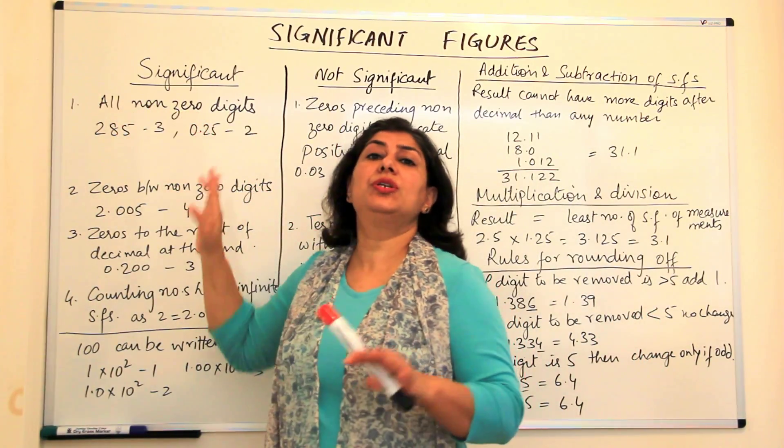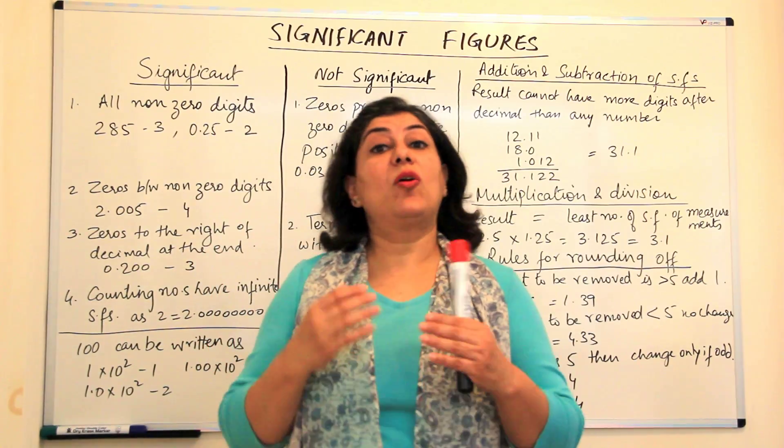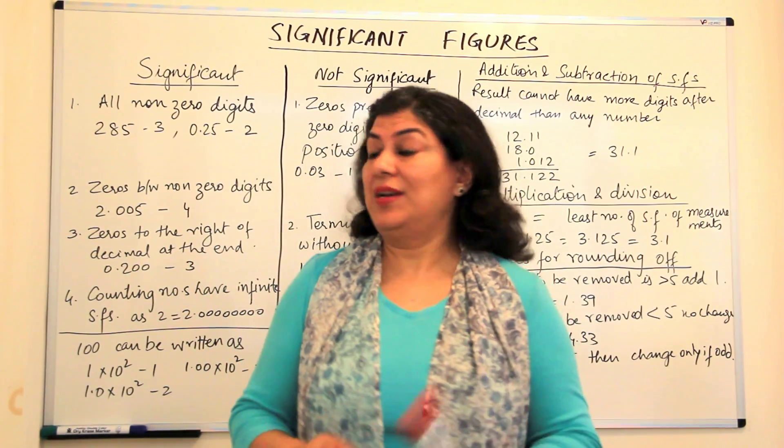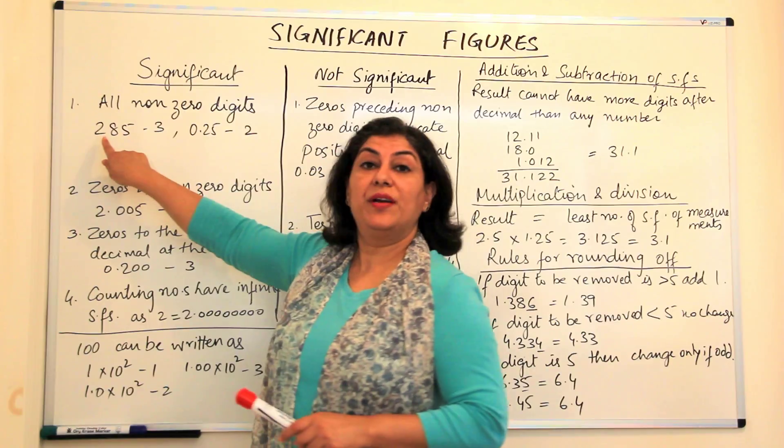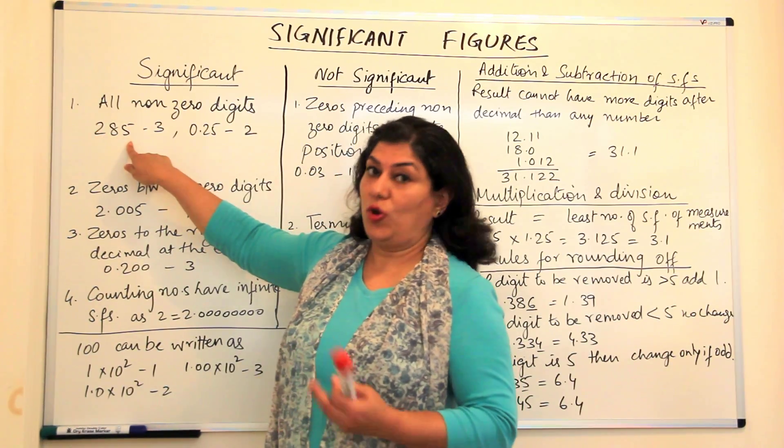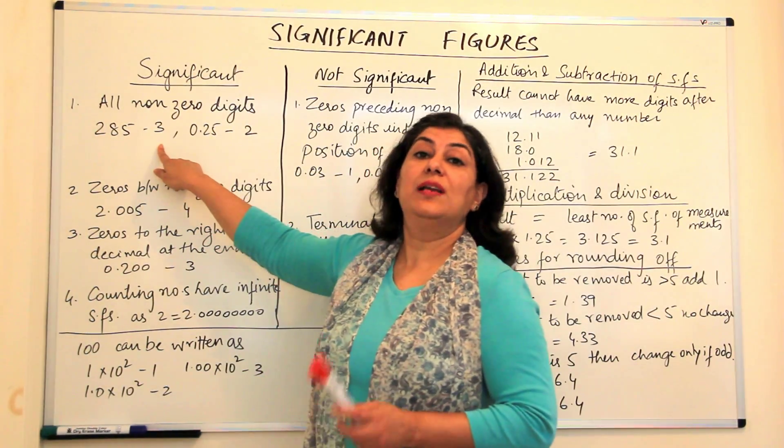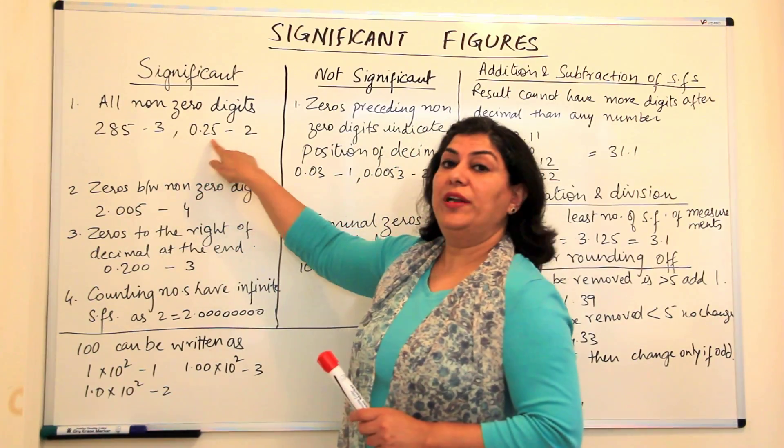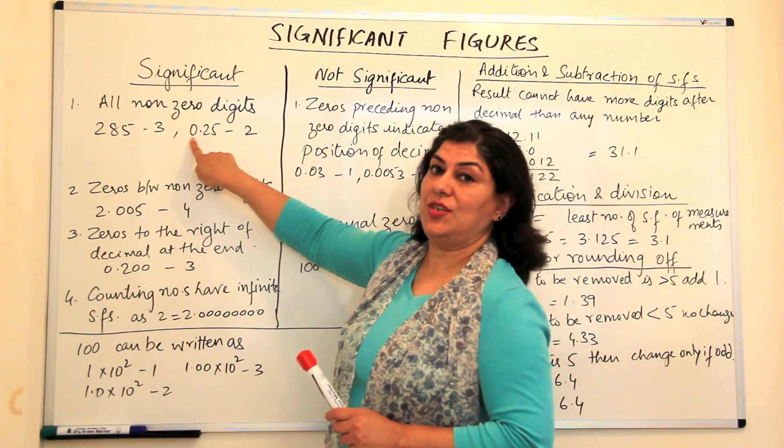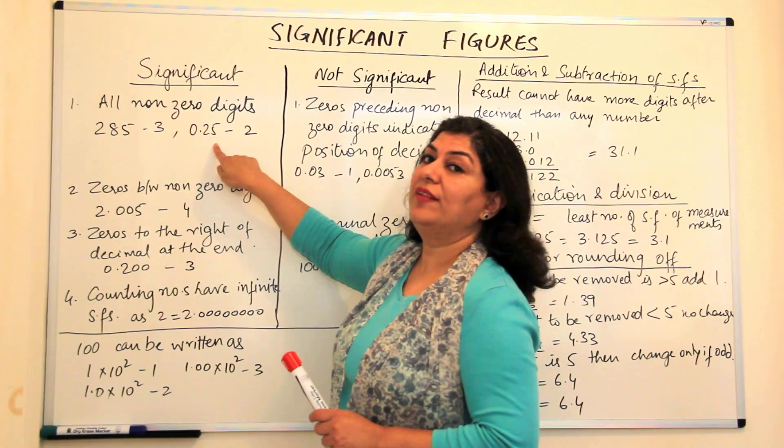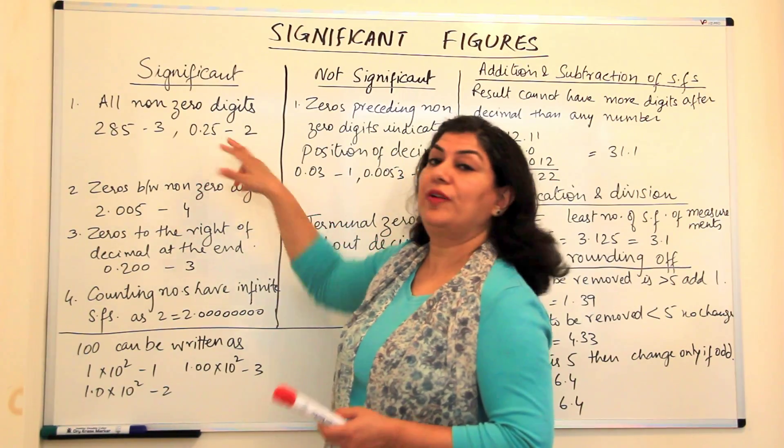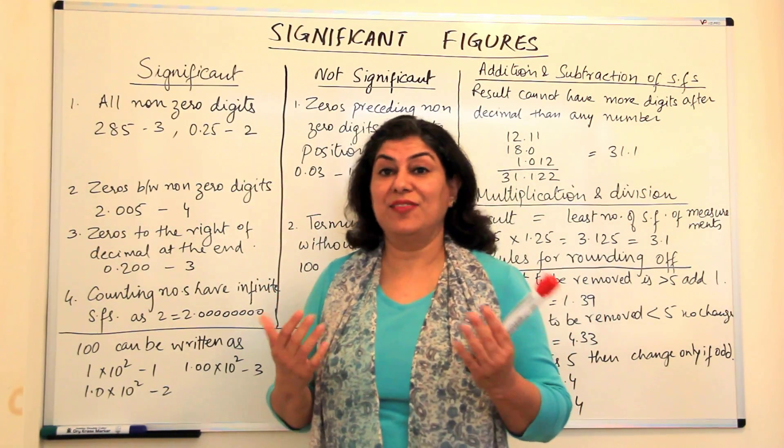All non-zero digits in a measurement are always significant. For example, if my reading is 285, then all the digits are non-zero and therefore they are all significant. 0.25 has one digit which is zero and these two fives are non-zero digits, therefore the two fives will always be significant.